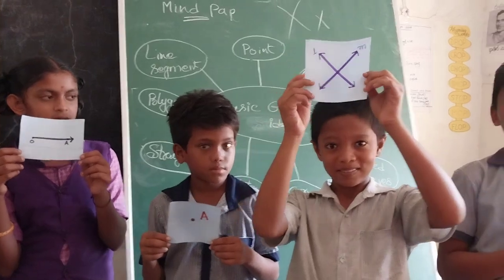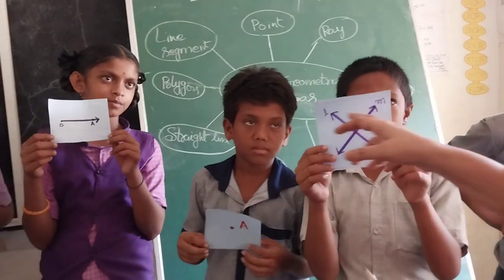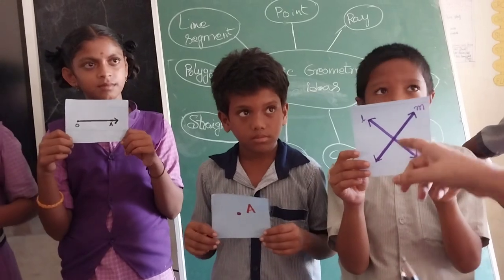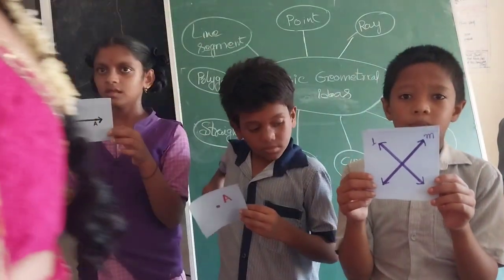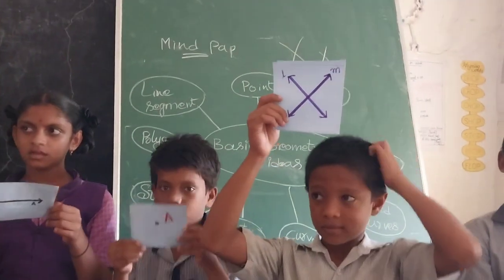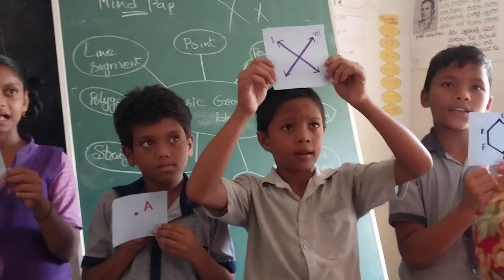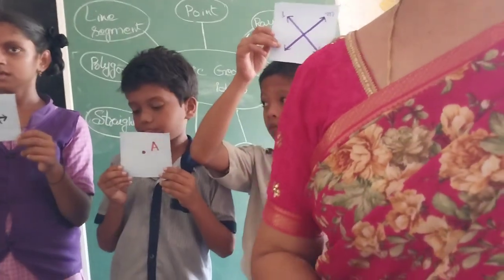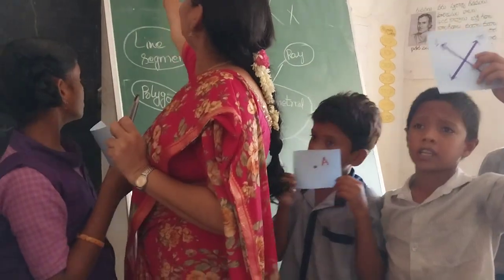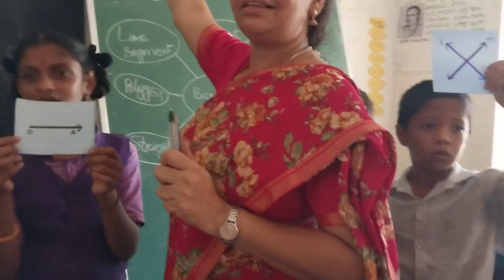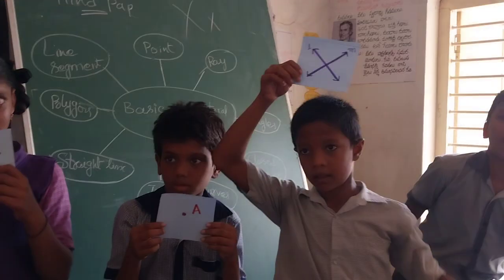Intersecting lines — what are the names of those two lines? L and M. Intersecting lines means they meet at one point. Those are called intersecting lines. For example, the symbols plus (+), equals (=), and cross (×) — the plus and cross are intersecting lines, and the equals sign represents parallel lines. Very good.